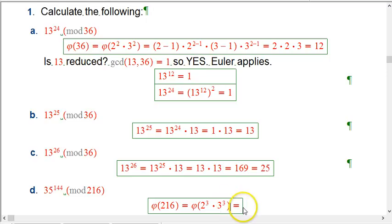One more in this vein, pretty similar. Let's just switch to a different mod, mod 216. Not that different. Now it's 2 cubed times 3 cubed.